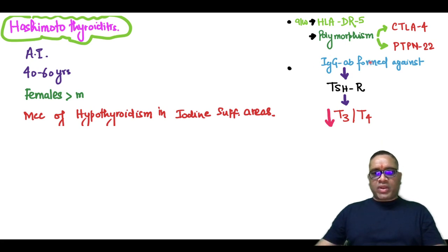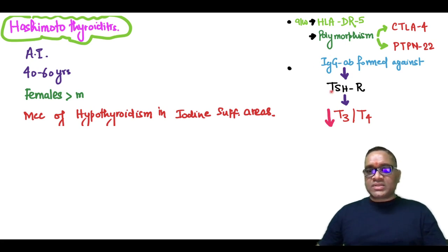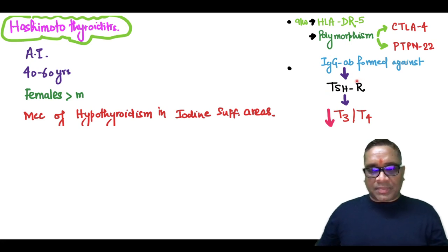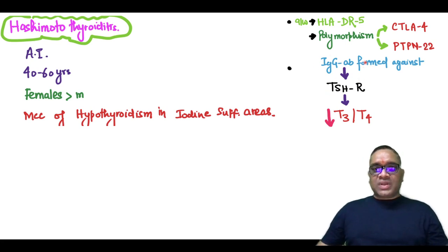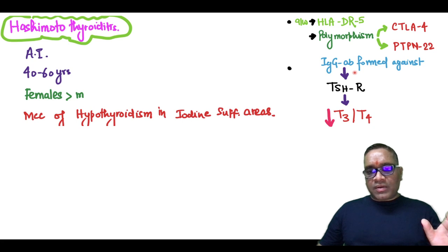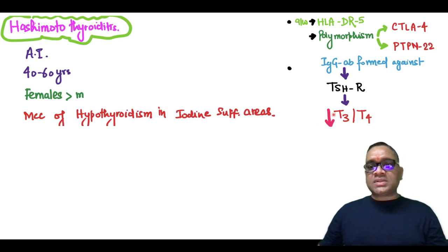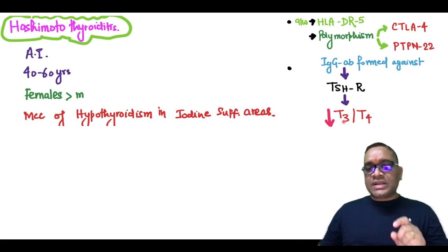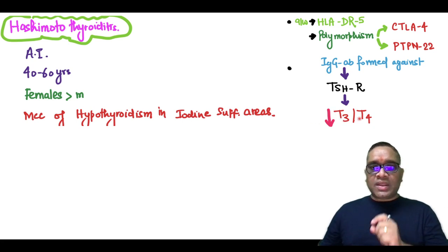IgG antibodies are formed against the TSH receptor, which will alter the function of the thyroid cells, and there will be a decrease in T3 and T4 secretion.